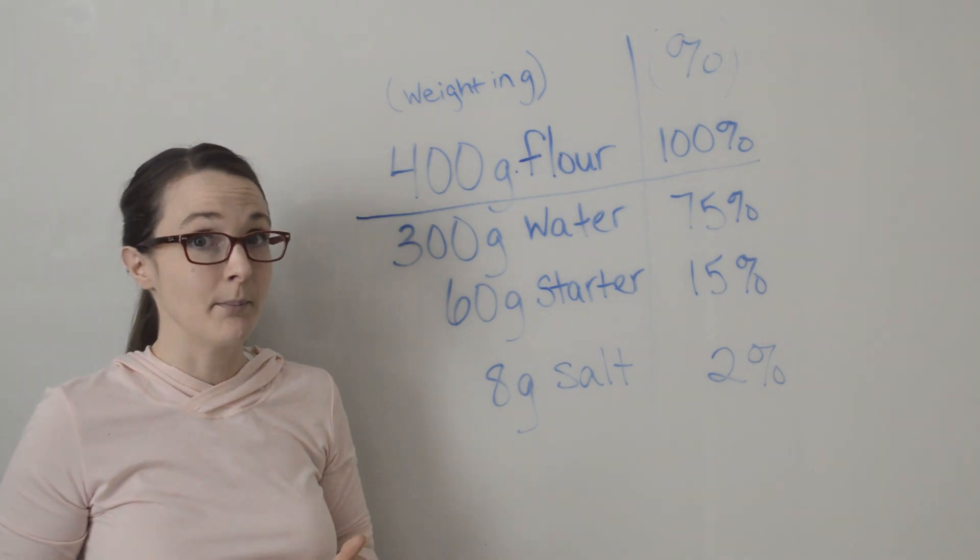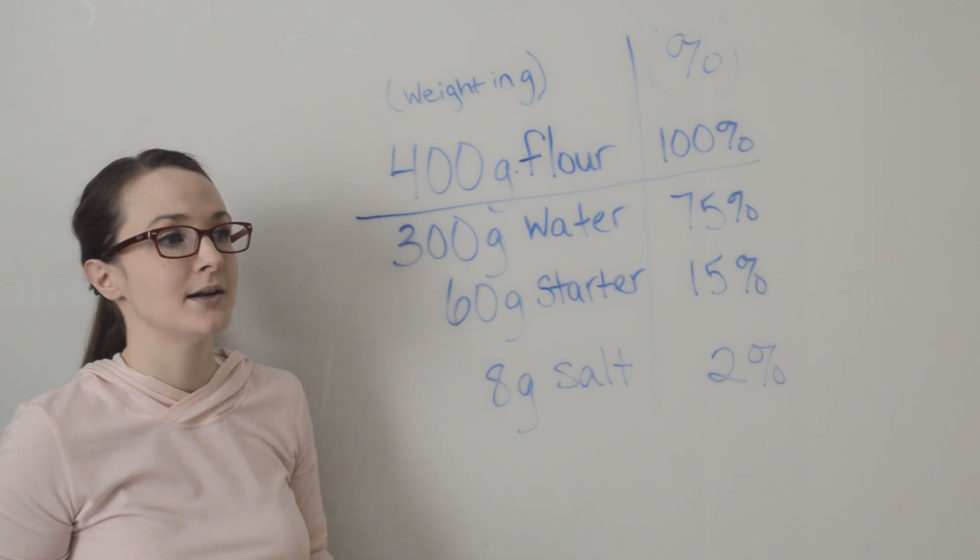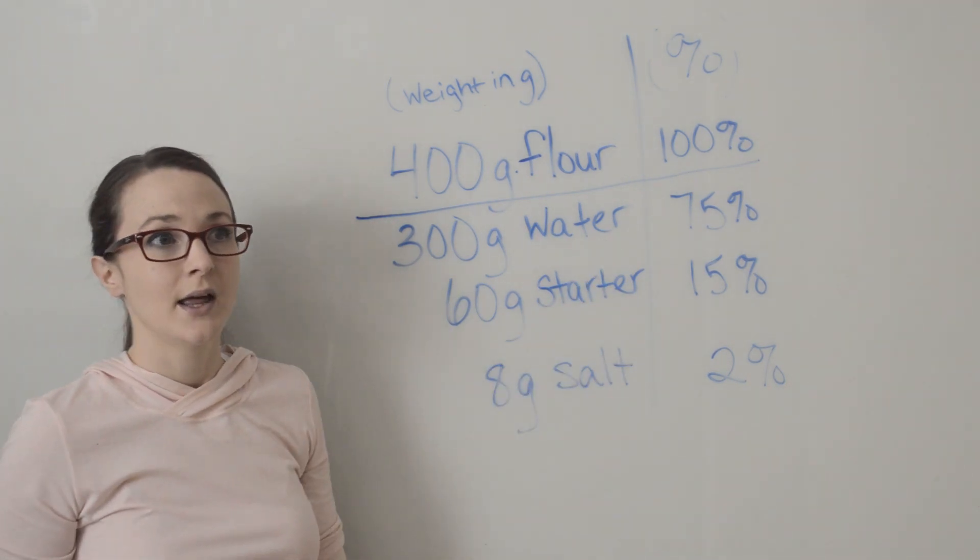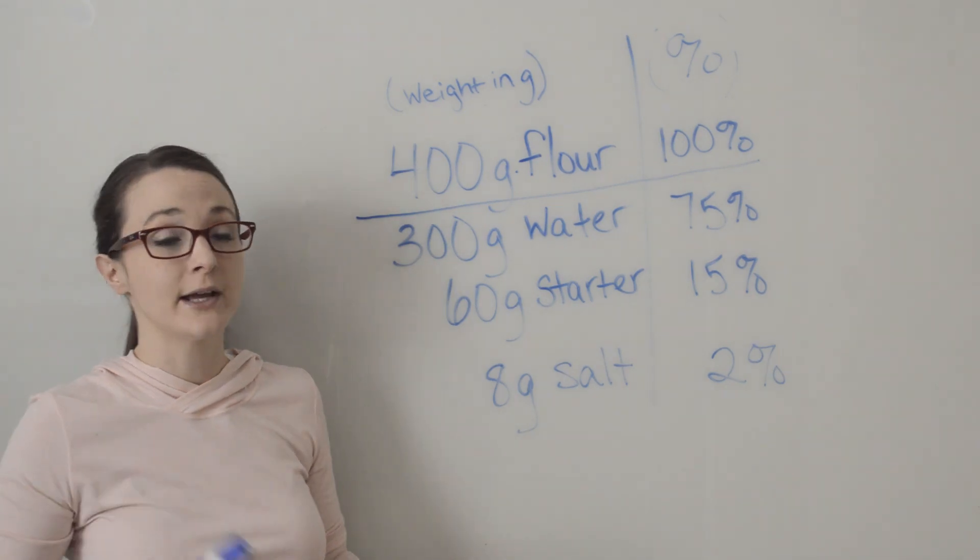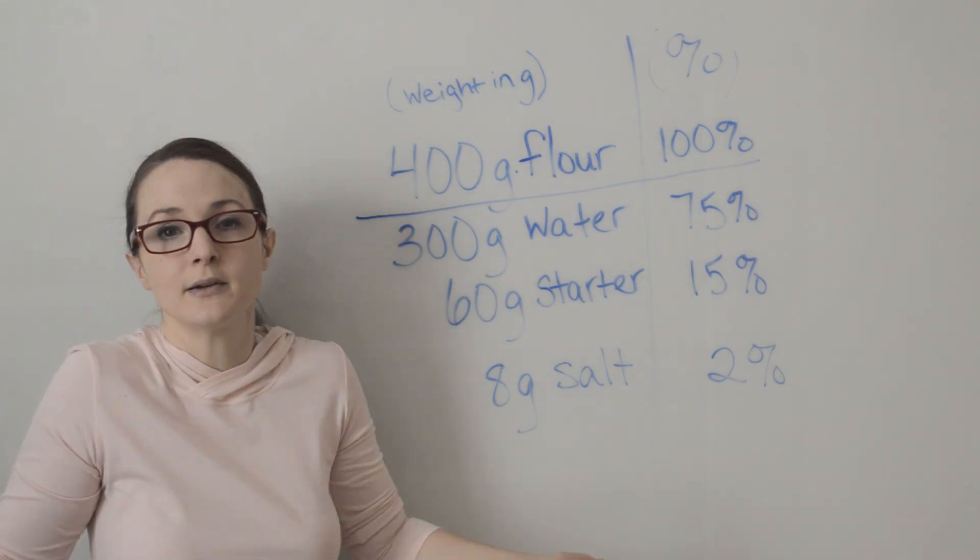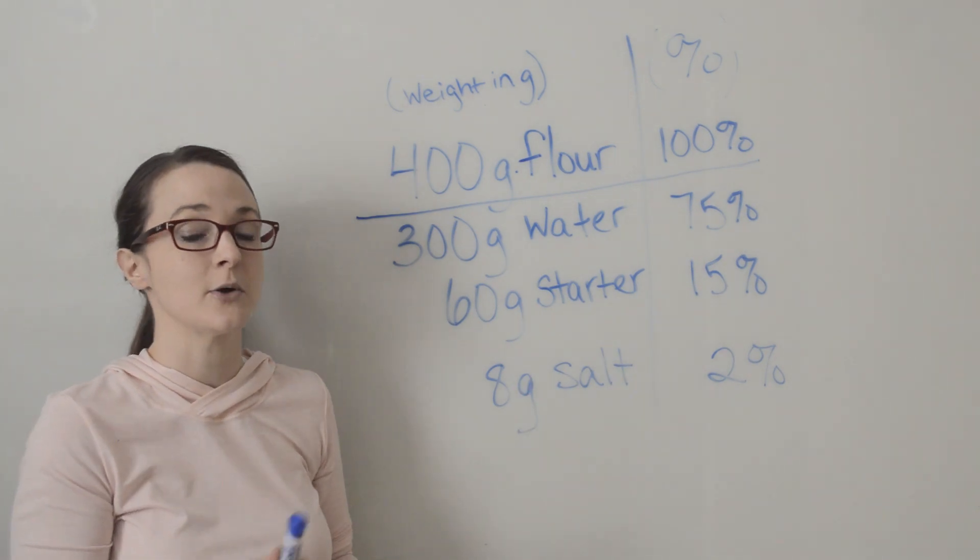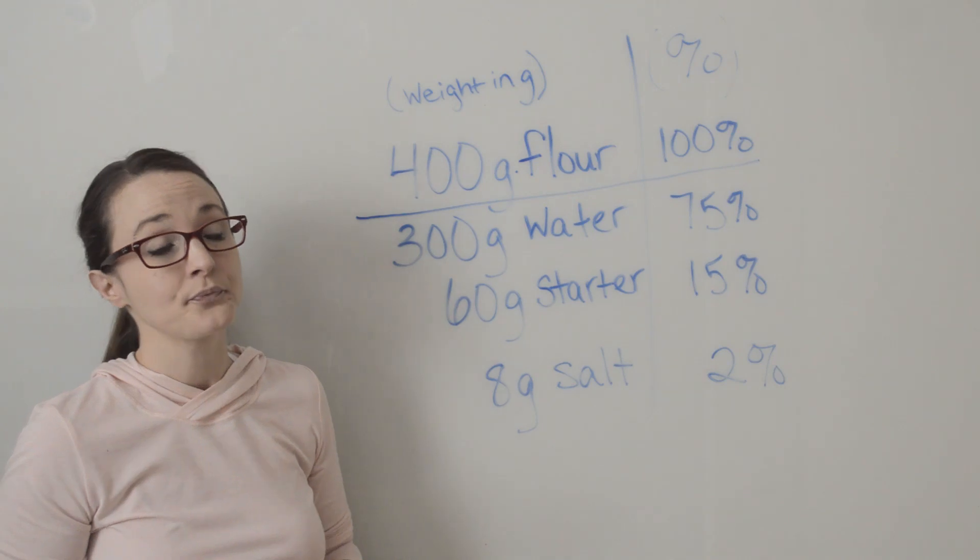If I know that somebody made a certain size batch and I know their percentages, I can make that batch into whatever size I want. If I need to triple it, if I need to increase it by 2.238 times, then I know the percentages are always going to be there to tell you exactly how much of whatever ingredient you need based on the flour.